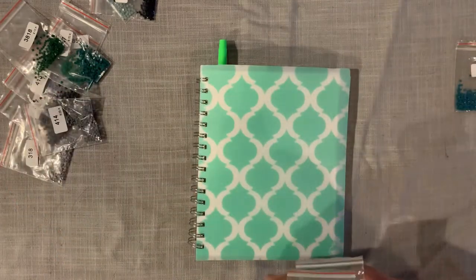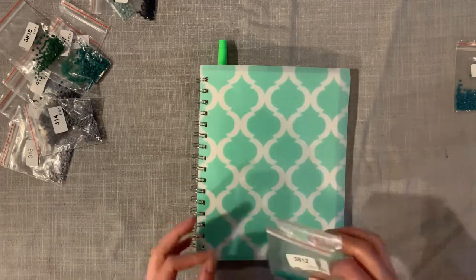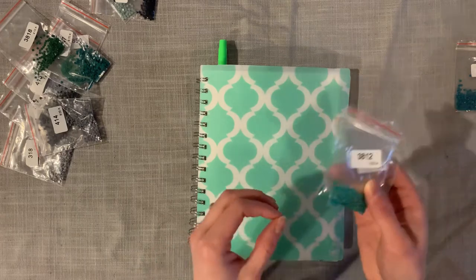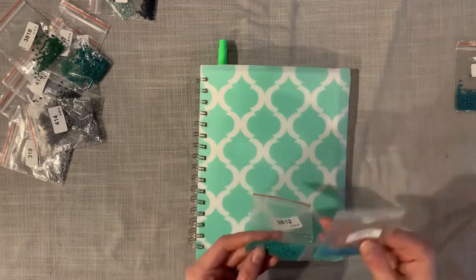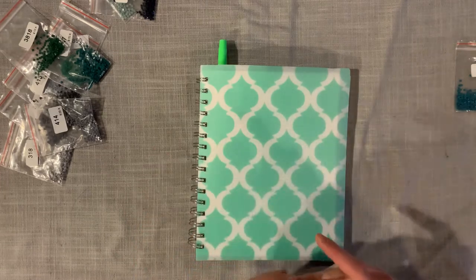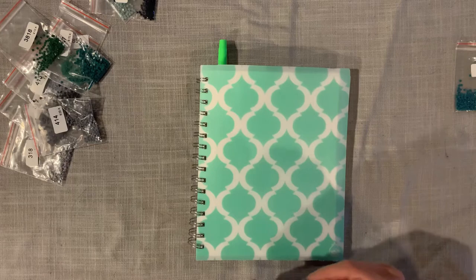I do like to keep track of them by squares versus round and then by company. So right now I have these ones from Amazon, I have some from Home Craftology and I have some from Diamond Art Club.